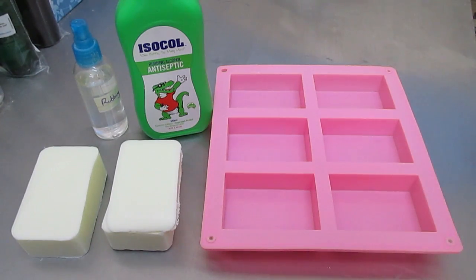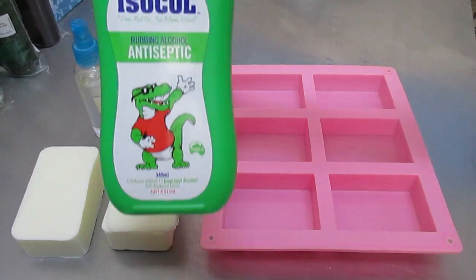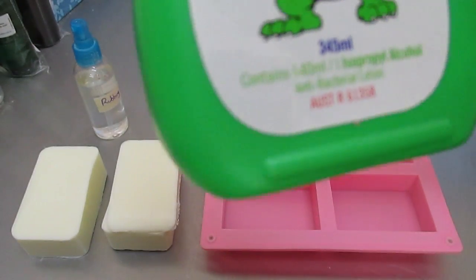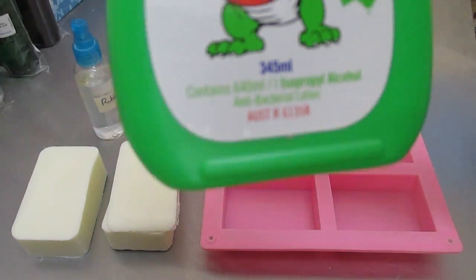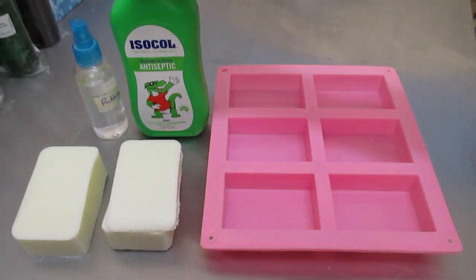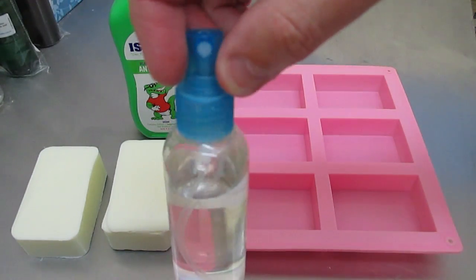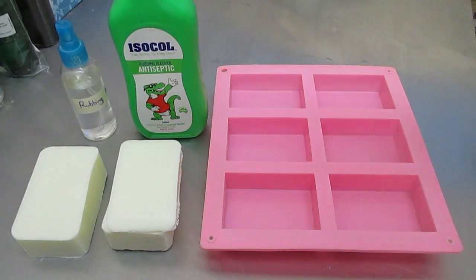So we've got some rubbing alcohol here on the table in the green bottle. This is the Australian one that I buy, 345 ml. So it's a small bottle. You can get these from your local chemist. And I put it into a tiny little spritz bottle like this. Basically I can use this with my melt and pour.